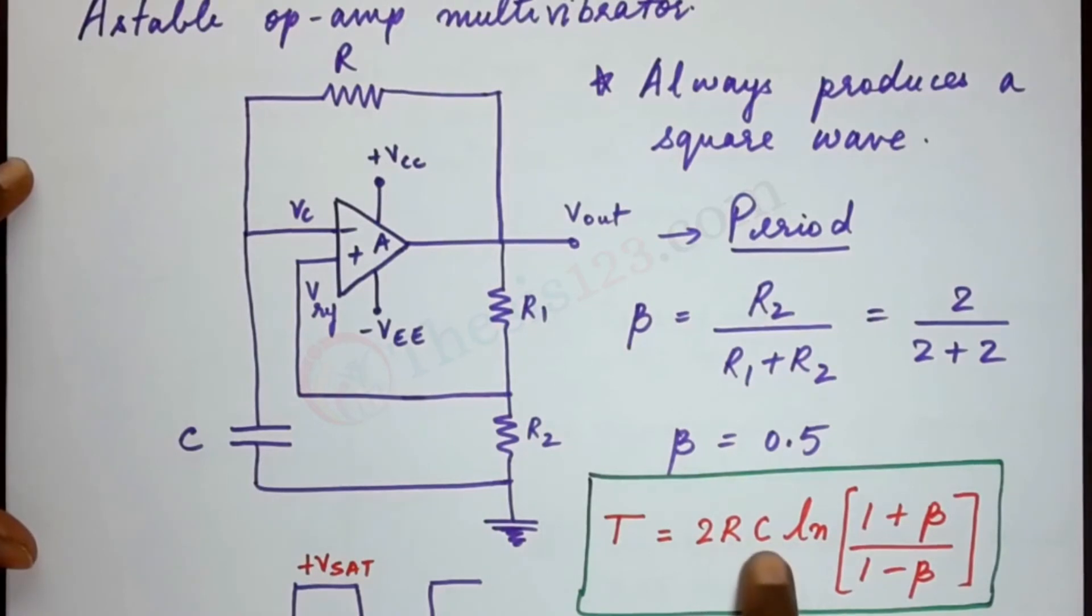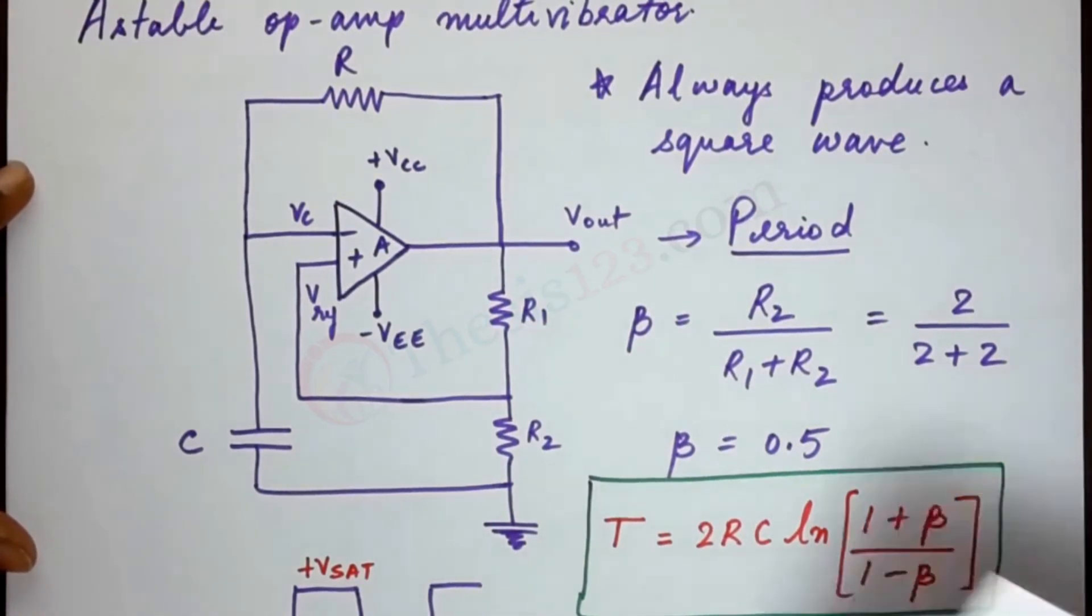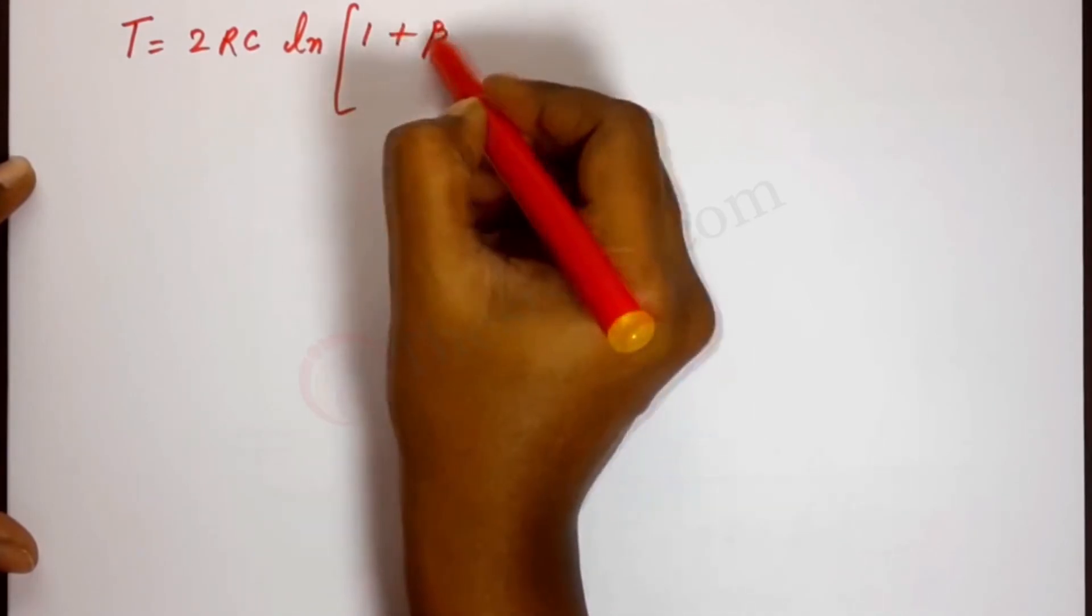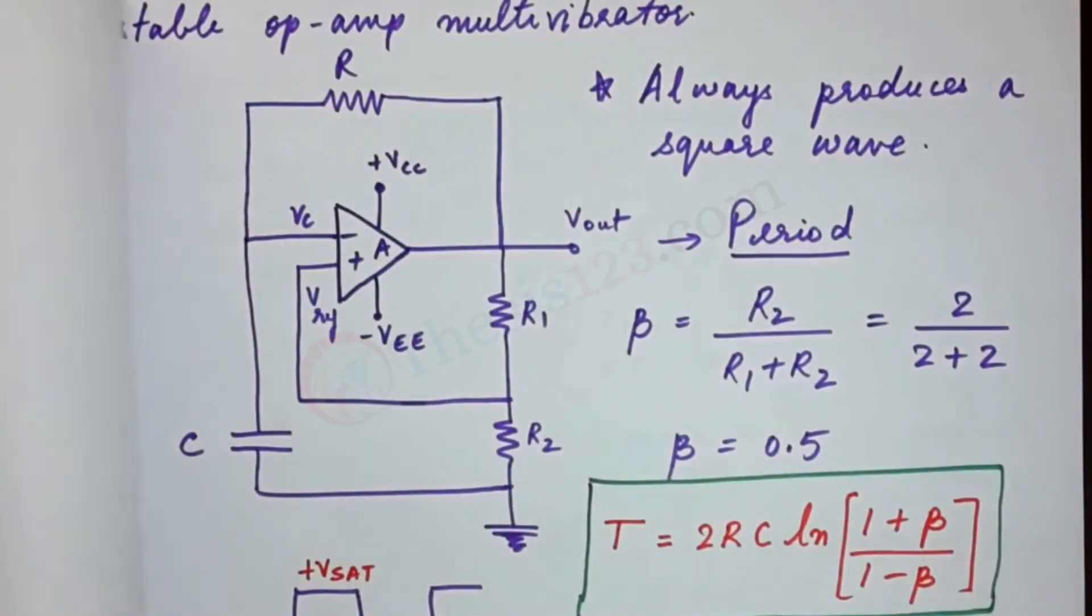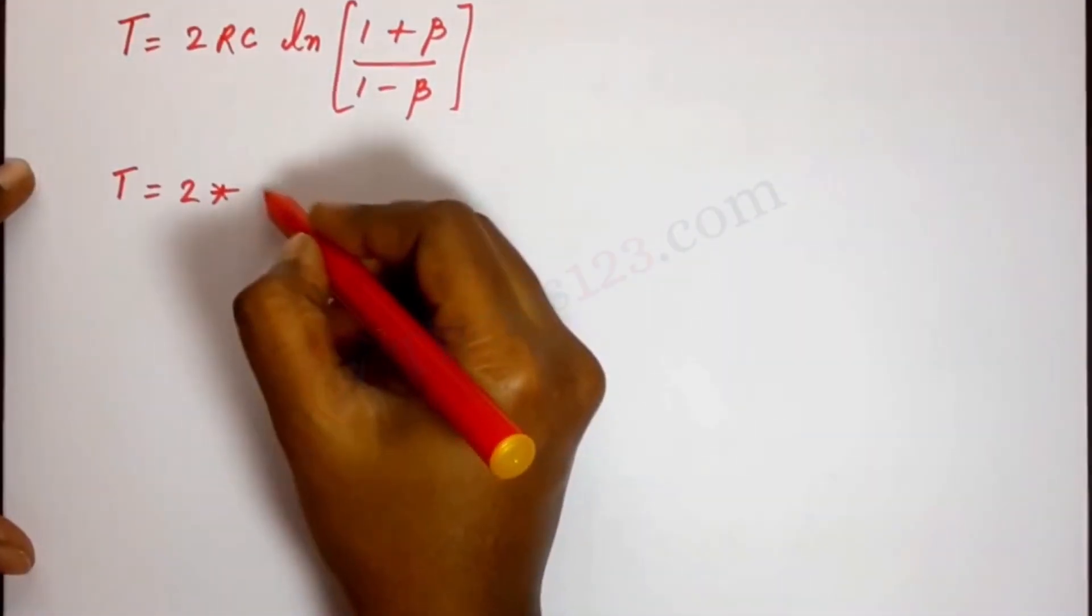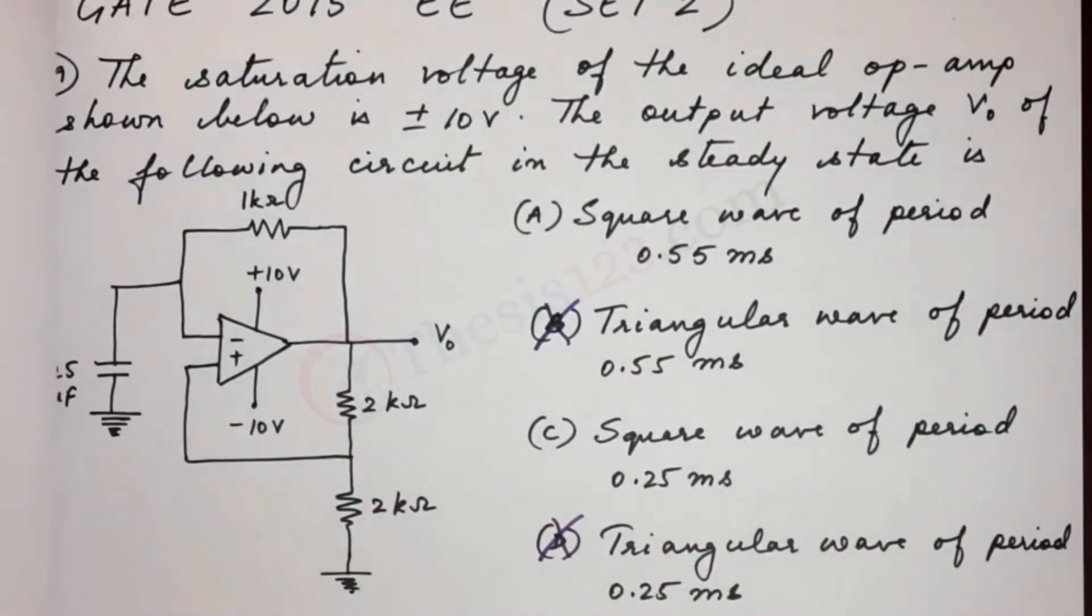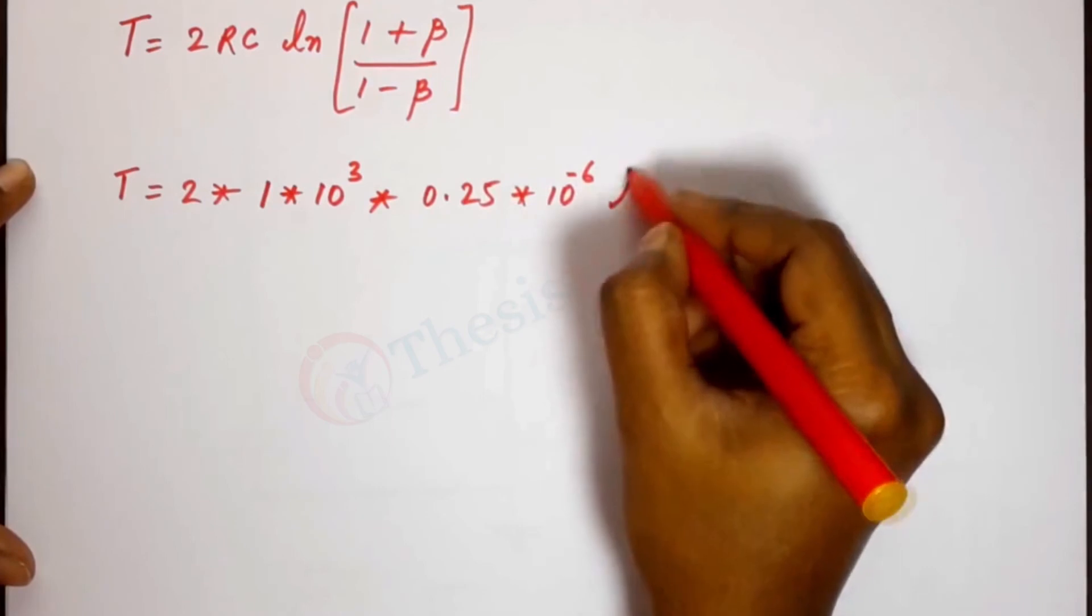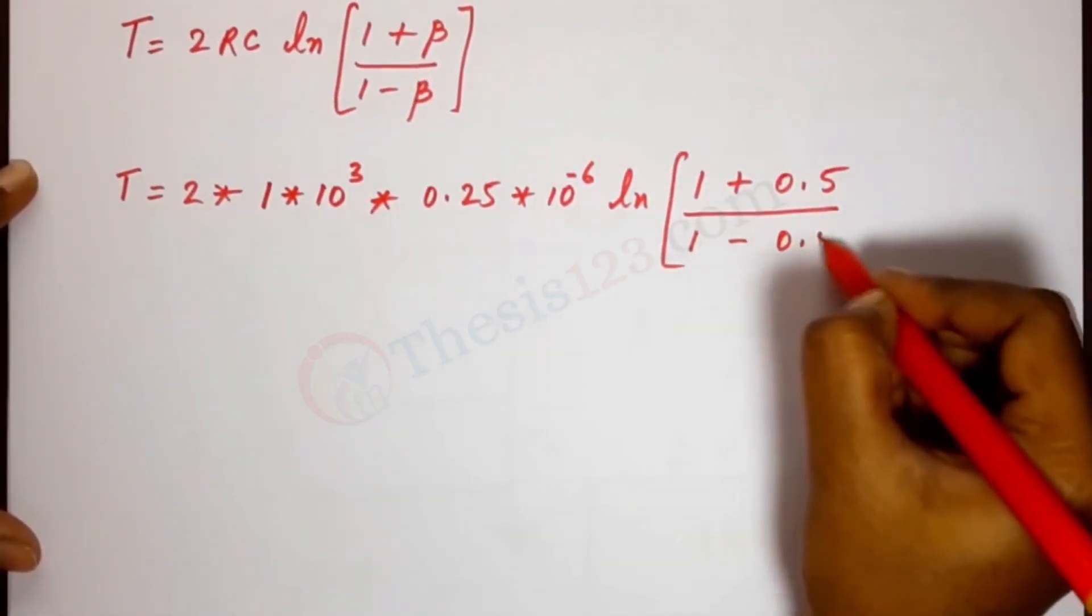Now we have the values of R, we have the values of C and beta. So all we have to do is plug in the values and then solve to see what the value of T is. So we have T is equal to 2RC Ln of 1 plus beta divided by 1 minus beta. Substituting the values, 2 into R, which is the value right there on top, 1 kilo ohm. That measures 1 into 10 power 3, into C, which was 0.25 microfarad. So that's 0.25 into 10 power minus 6.